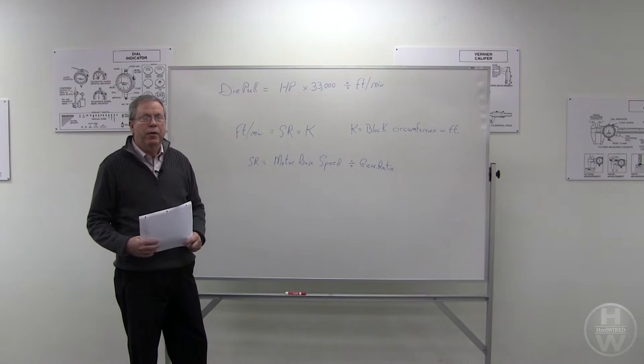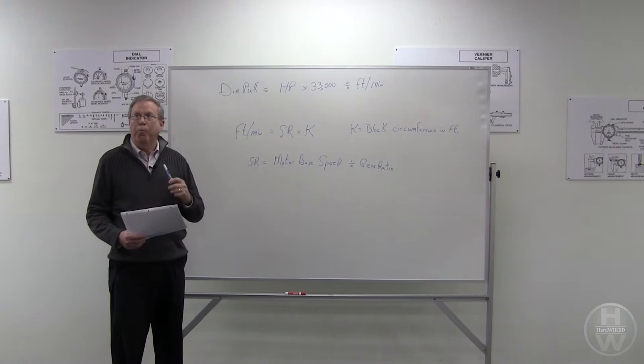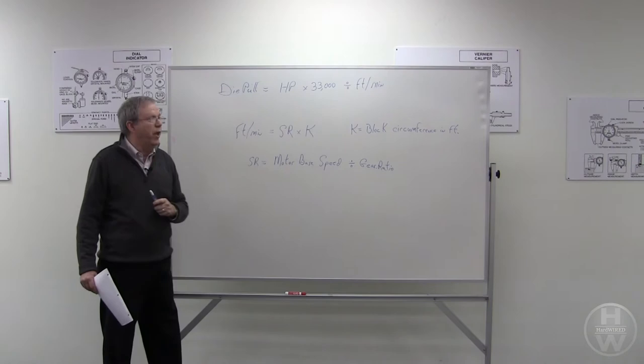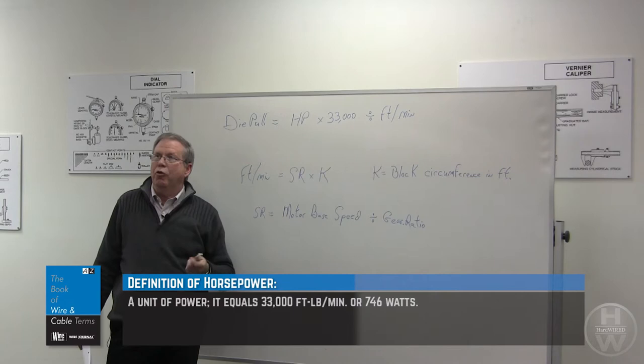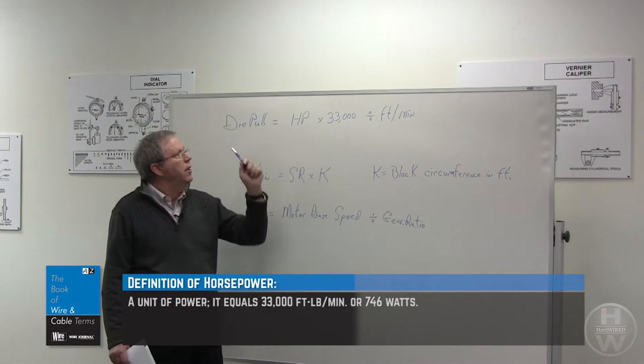The best way to determine that is to first decide what the die pull or pull force of that block would be, and we're going to use the above equation to do that. We're going to take horsepower, which can be obtained from the motor plate, times 33,000 divided by feet per minute.